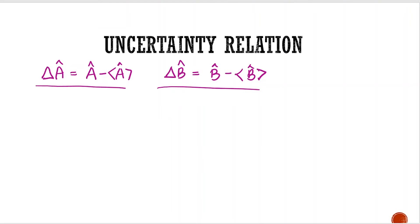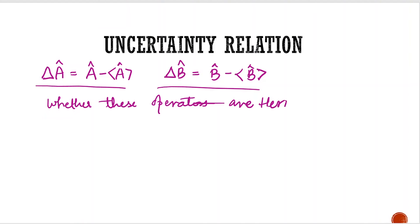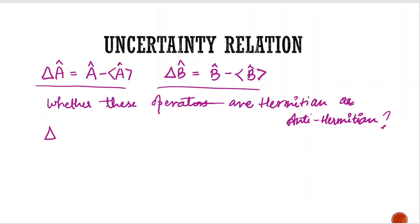First of all, we will see whether these operators are Hermitian or anti-Hermitian. So let's start with ΔA. If we take the adjoint of this uncertainty operator, we just have to open the ΔA operator and then take the adjoint.